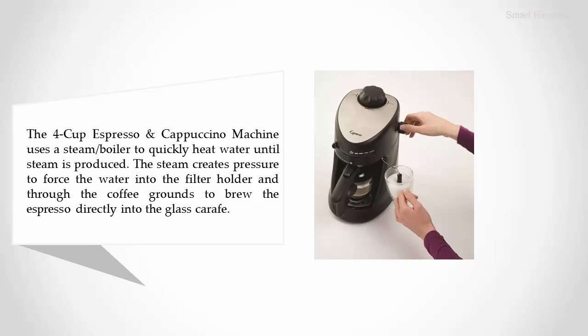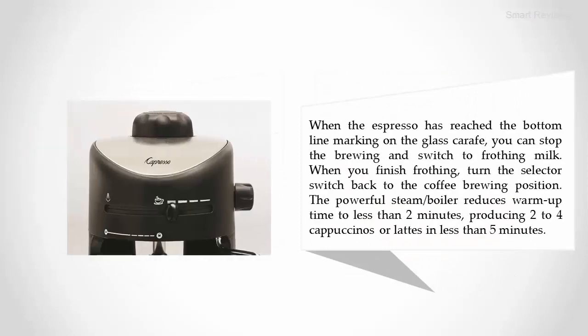When the espresso reaches the bottom line marking on the glass carafe, you can stop brewing and switch to frothing milk. When you finish frothing, turn the selector switch back to the coffee brewing position. The powerful steam boiler reduces warm-up time to less than two minutes, producing 2 to 4 cappuccinos or lattes in less than five minutes.